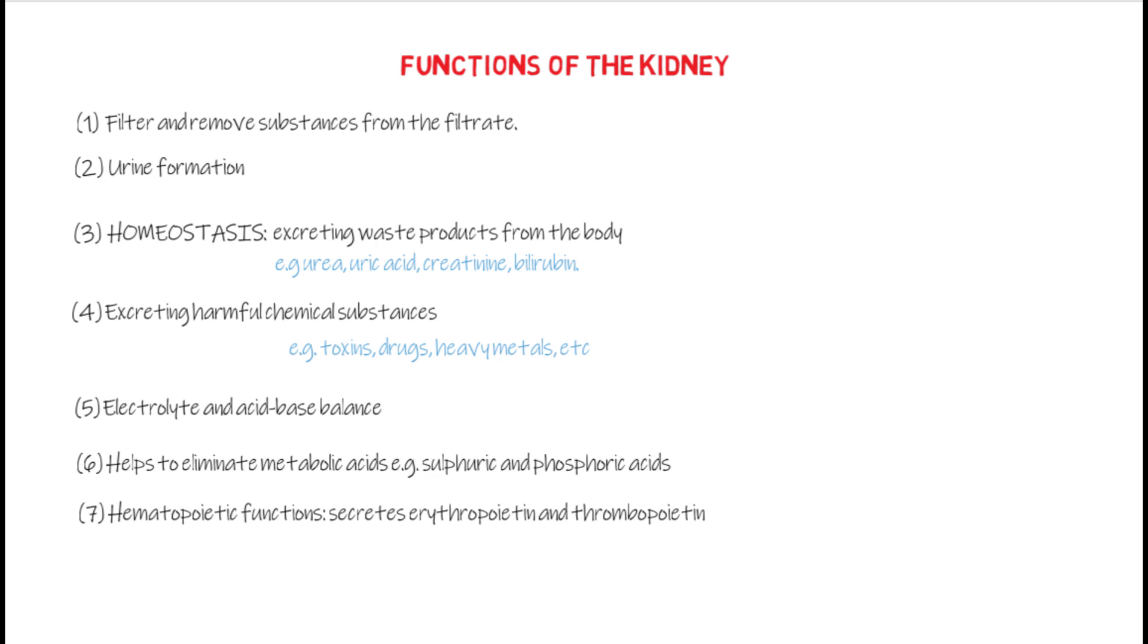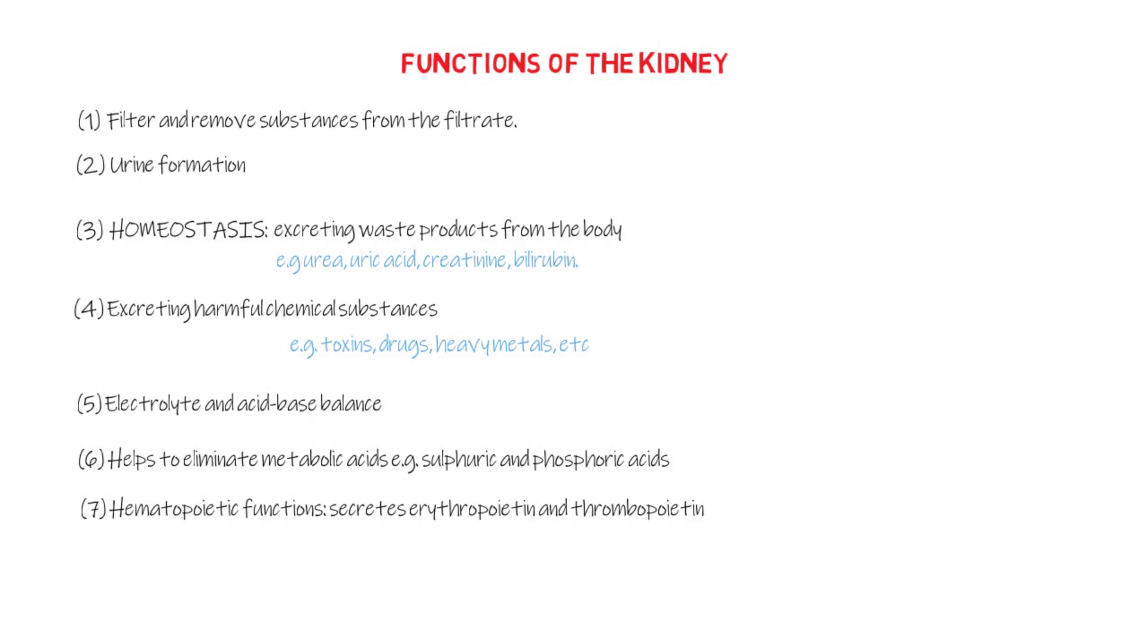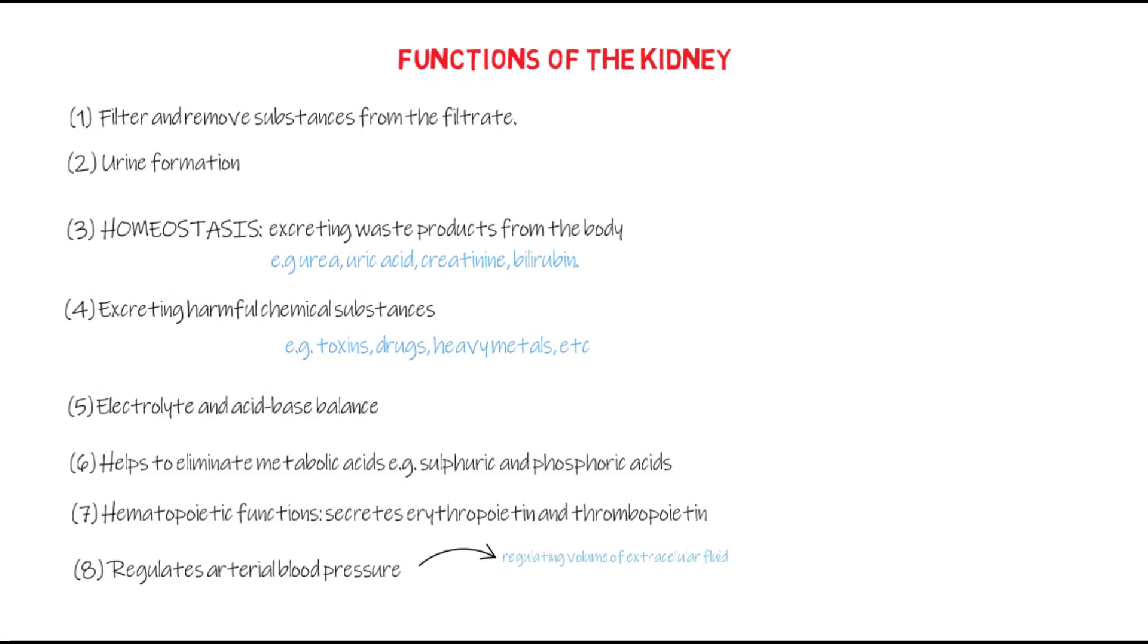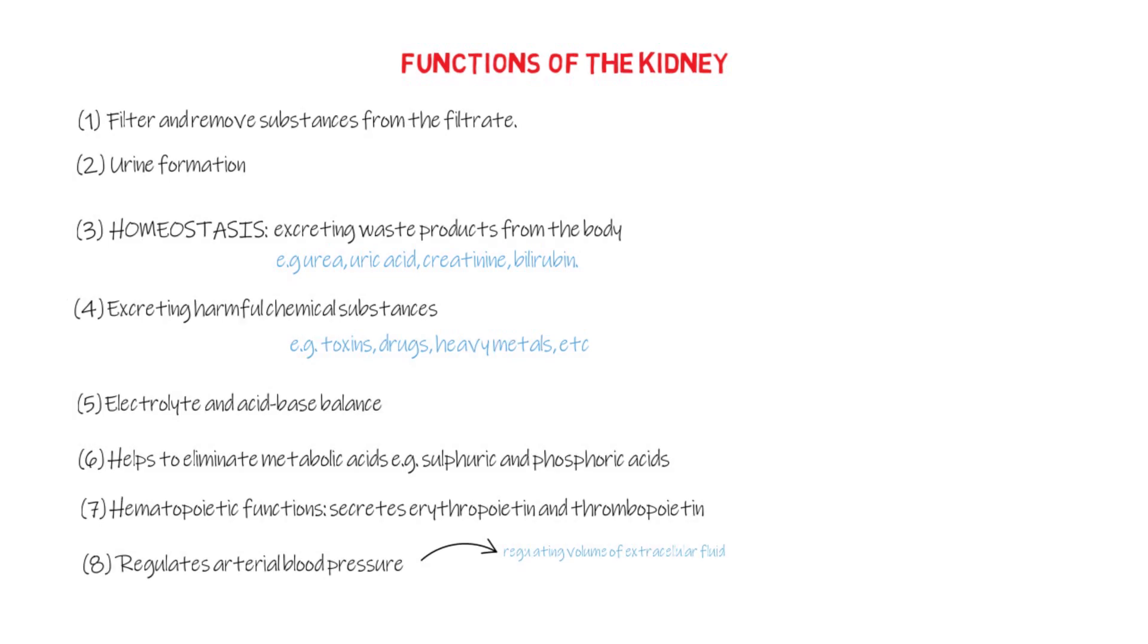It also secretes thrombopoietin that stimulates the production of thrombocytes. Also, the kidney helps to regulate arterial blood pressure, and this happens in two ways: by regulating the volume of extracellular fluid and also through renin-angiotensin mechanism.